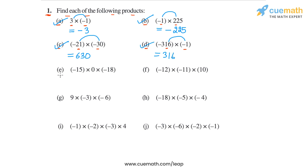Then in part E, we have the product minus 15 into 0 into minus 18. Since one of the terms in the product is 0, we can directly say that the overall product will also be 0. So the answer will be 0.